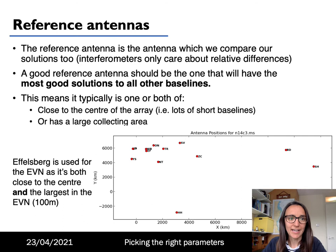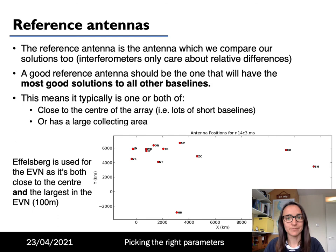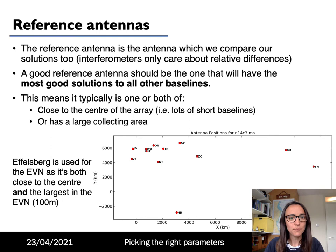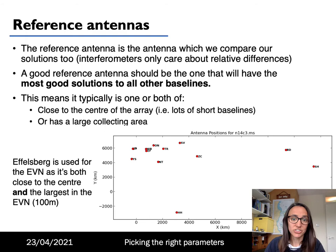One of the first things you're going to need to choose when you're doing calibration is your reference antenna. The reference antenna is the antenna to which we compare our solutions, because interferometers only care about relative differences. A good reference antenna should be one that will have the most good solutions to all other baselines — typically this means it's close to the centre of the array, so it has lots of short baselines, and if your array has different size antennas it should be one with a large collecting area. For example, with the European VLBI Network, Effelsberg is generally always used as the reference antenna because it's both close to the centre of the array and it's the largest.